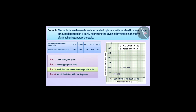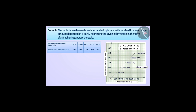Similarly, we will also mark the coordinates (1500, 150), (2000, 200), and (2500, 250). After this, we will join all the points with line segments. We have depicted the amount deposited and the annual simple interest received in the form of this graph. All the line segments in the constructed graph form an unbroken line, therefore it is a linear graph. The graph tells us that as the amount of money deposited in the bank increases, the simple interest also increases — this graph shows the two quantities in proportion.